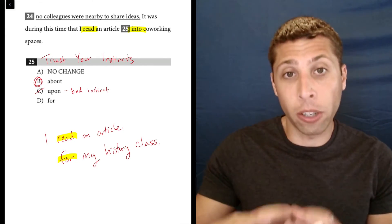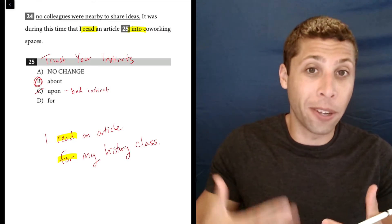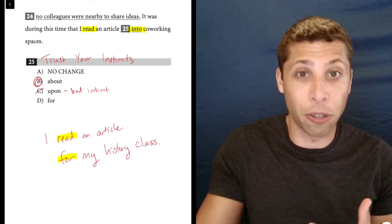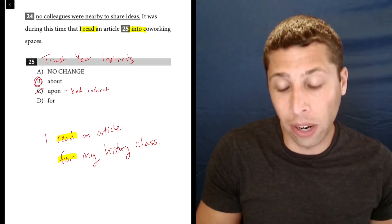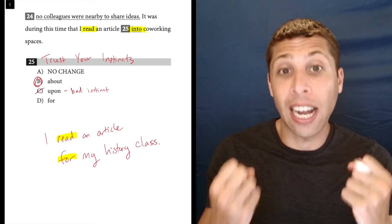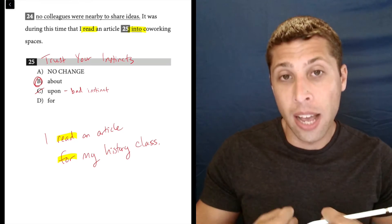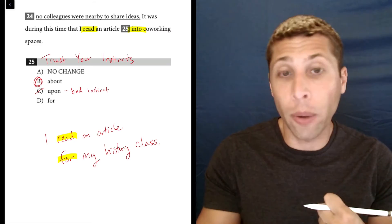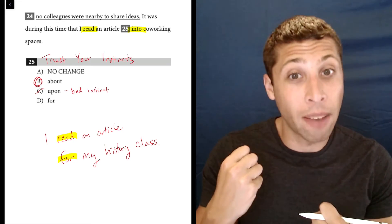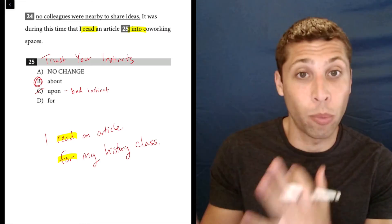But notice the context is different, right? I'm not talking about what the article was about. I'm talking about the purpose of having to read it, right? What it was for. And so that's how these little words operate in English is they're very context heavy. And your brain with experience in English gets good at knowing what the right word is based on the context without really having to think about it too much. And that's why trusting your instincts is the best way to go.